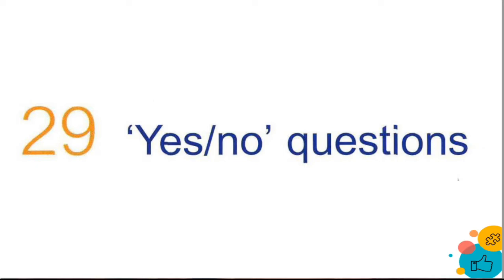Vamos a hablar acerca de yes and no questions. Son clases donde nosotros estamos aprendiendo inglés desde cero. La gran mayoría de ustedes ha empezado desde la clase número 1, desde que esta página hace casi 3 meses está en operaciones brindando estos cursos gratuitos — 29 clases juntos. Son temas muy geniales porque son más sencillos. Antes estábamos con el presente, el pasado, el futuro. Pero ahora ya terminó la parte difícil del inglés y podemos dedicarnos a los yes and no questions.